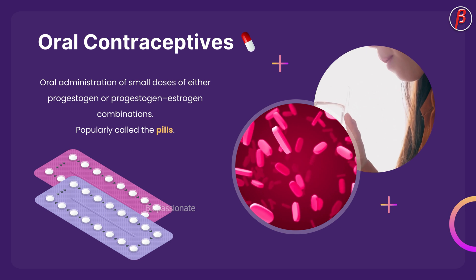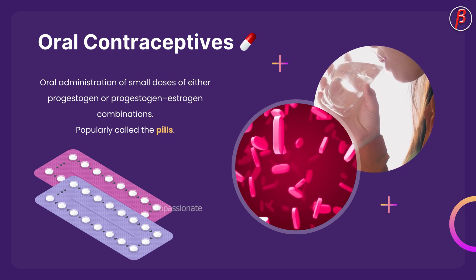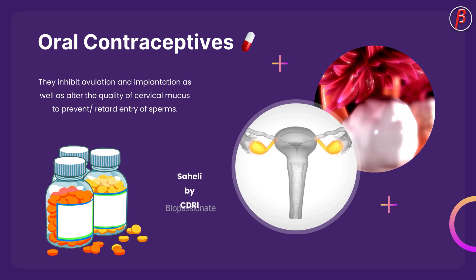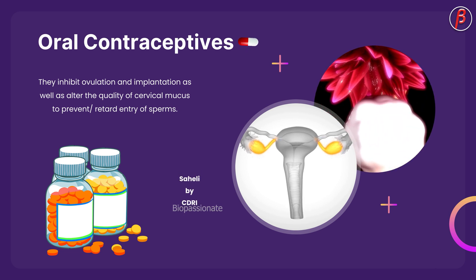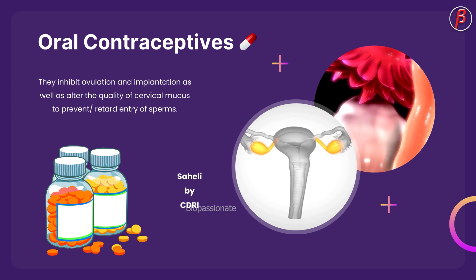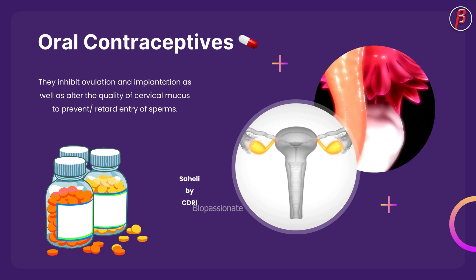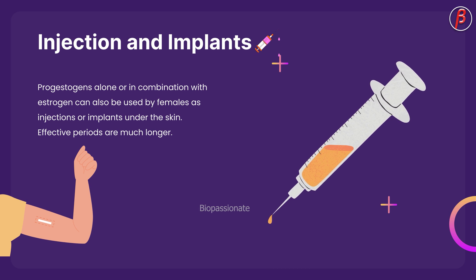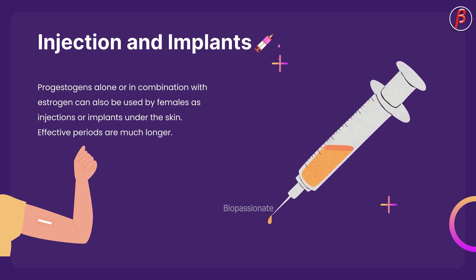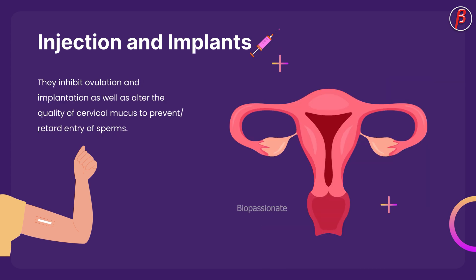Oral contraceptives involve the oral administration of small doses of either progestogen or progestogen-estrogen combinations, popularly called the pill. They inhibit ovulation and implantation, and alter the quality of cervical mucus to prevent or retard entry of sperms. Progestogens alone or in combination with estrogen can also be used by females as injections or implants under the skin, with much longer effective periods.